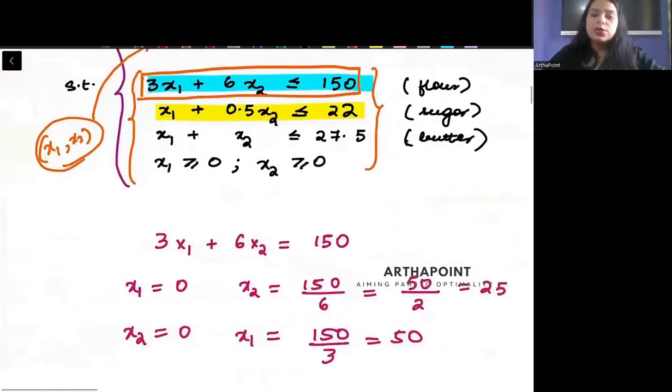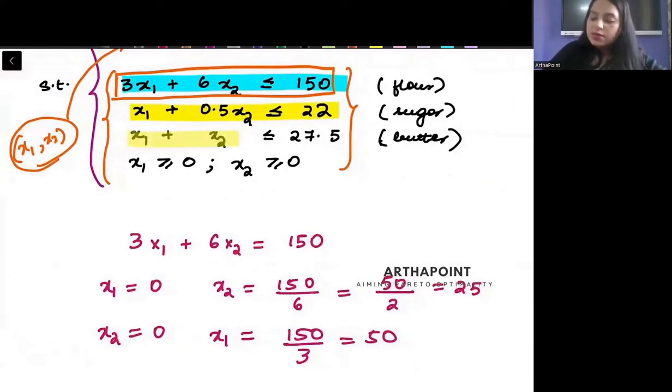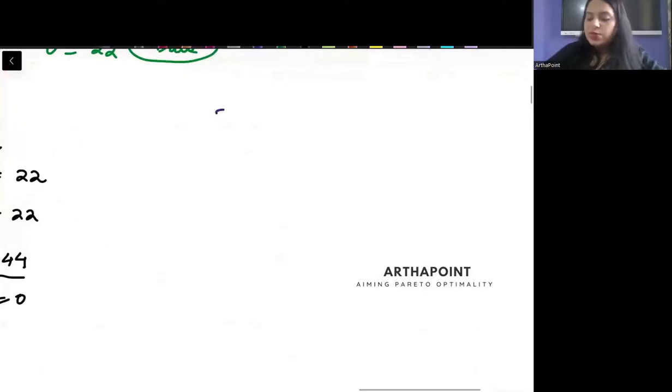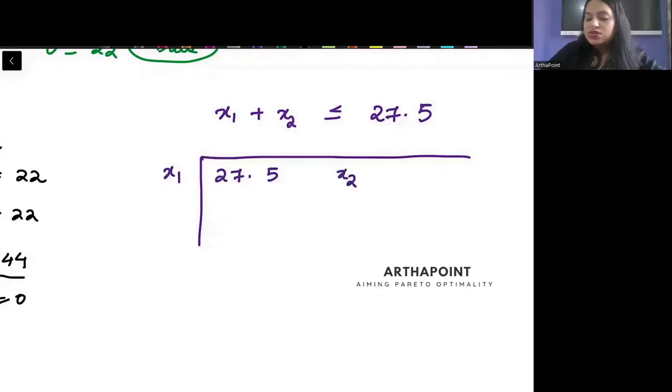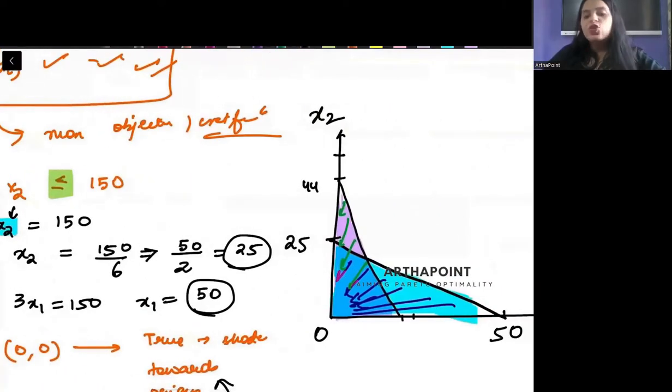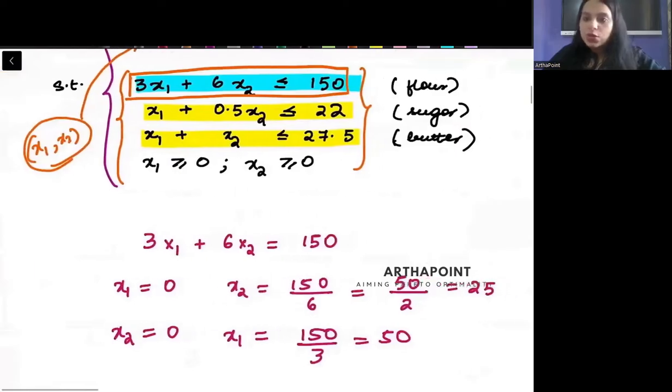Now you will go to the third equation. This is saying x1 plus x2 less than equal to 27.5. It's pretty simple. If I just make this, either my x1 is 27.5 when x2 is 0 or my x2 is 27.5 when x1 is 0. Again, you will plot this line and you will shade towards the origin.